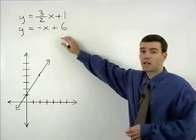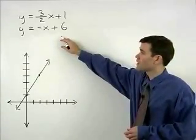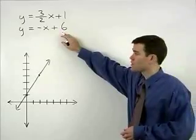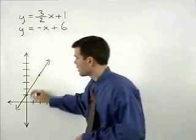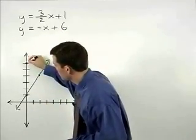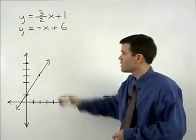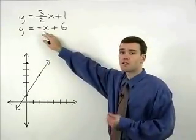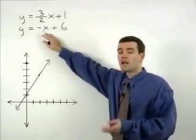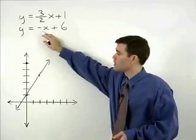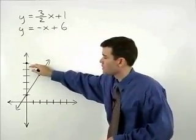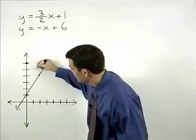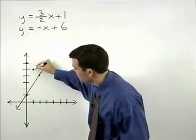For our second line, y equals negative x plus 6. It has a y intercept of 6, up 6 units on the y axis. And its slope can be thought of as negative 1 or negative 1 over 1. So from our y intercept, we go down 1 and to the right 1 to plot a second point.